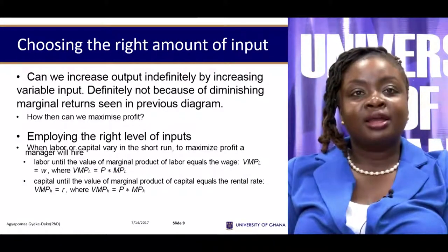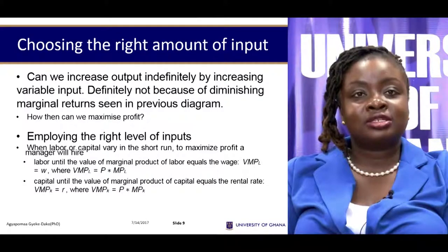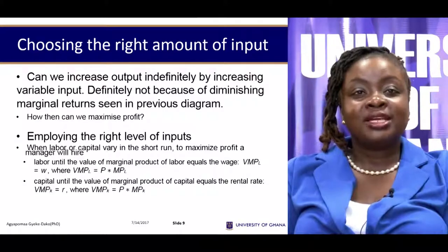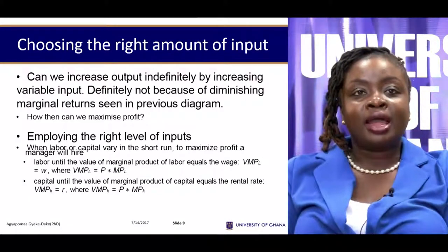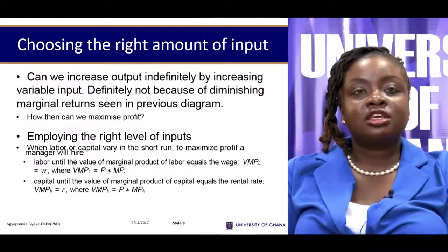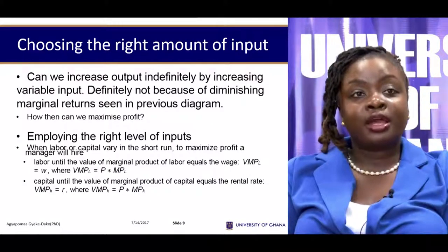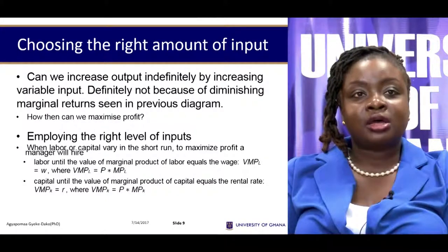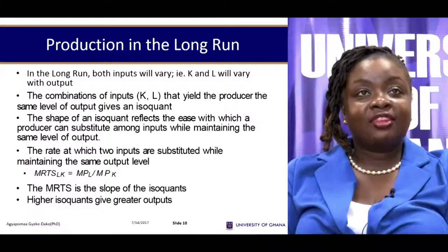We employ labor up to the point where the price times the marginal product of labor equals the marginal cost of labor. Price times marginal product of labor is called the value of the marginal product of labor (VMP_L). So we employ labor until VMP_L equals the marginal cost of labor. If capital were the variable input, we would employ capital up to the point where the value of the marginal product of capital equals the additional cost of capital, which is r — the interest rate. This is the decision we make in the short run.